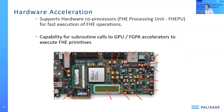We do focus a lot on hardware acceleration, particularly support for hardware co-processors. There are a number of papers on the Palisade website that look at subroutine calls for GPU and FPGA accelerators. Some of the early work that drove our thinking on this is the early work from DARPA Proceed that designed a Virtex 7 FPGA co-processor.